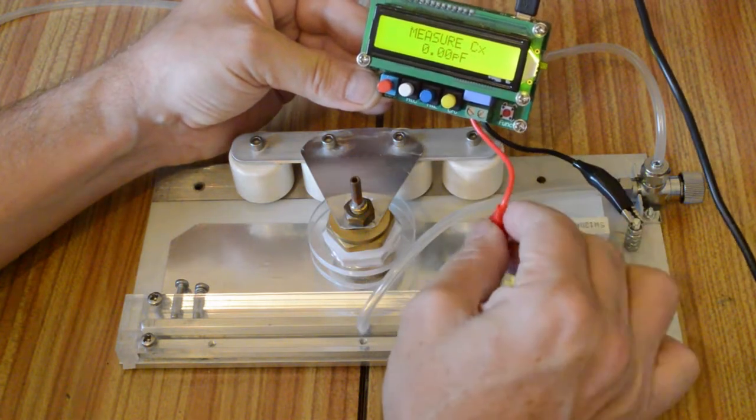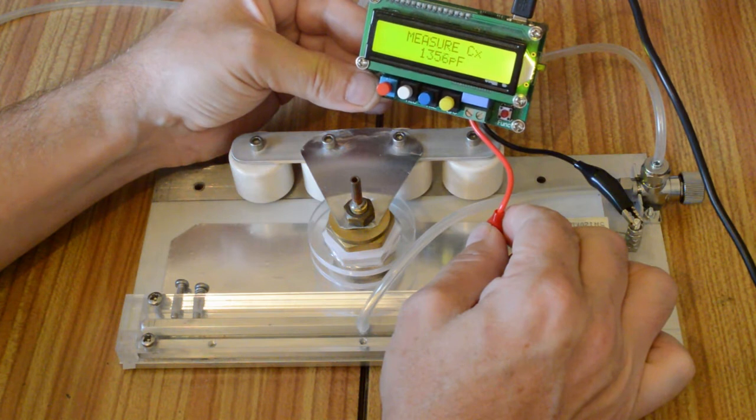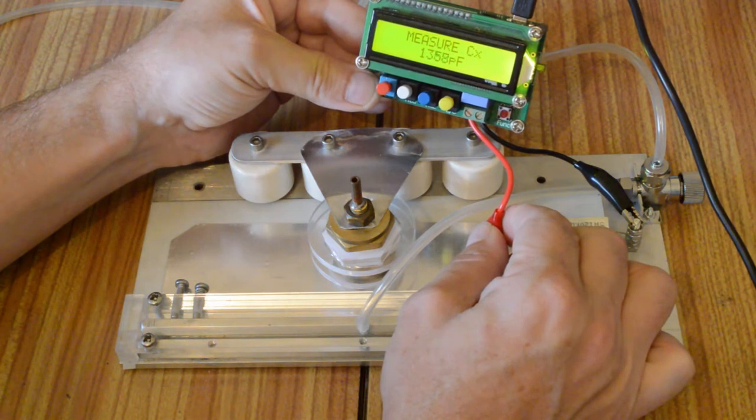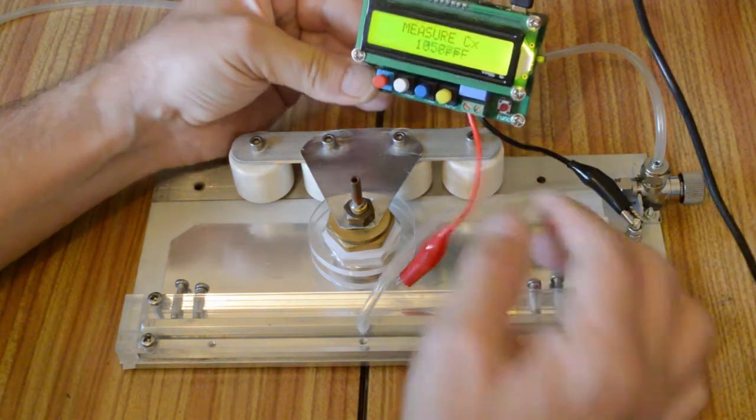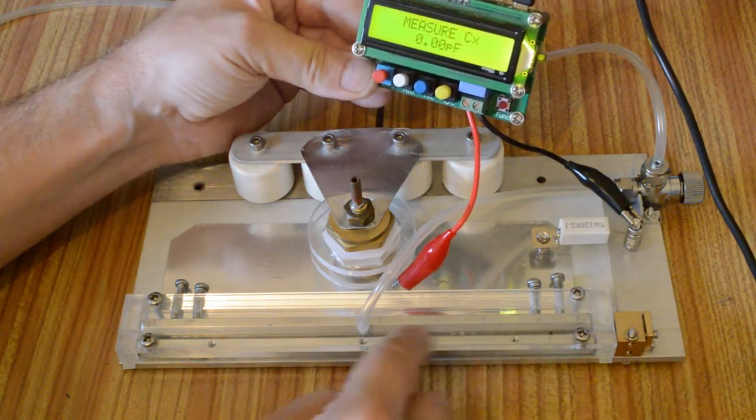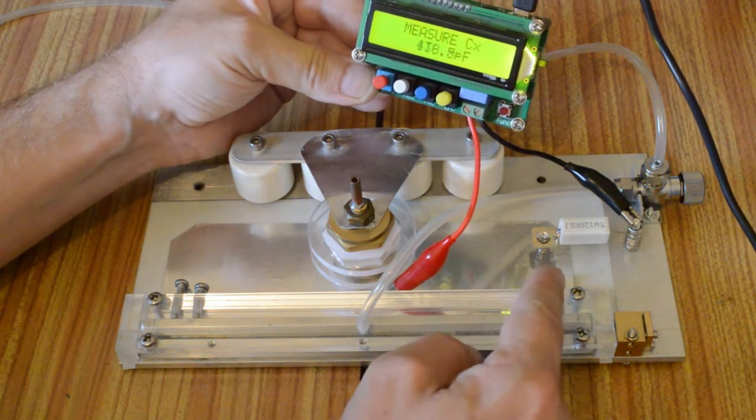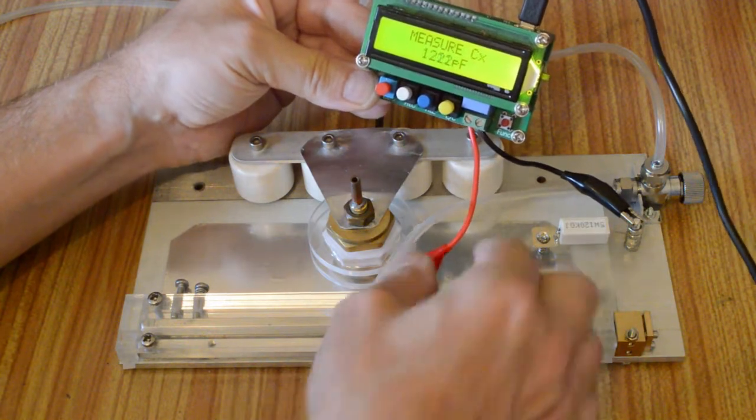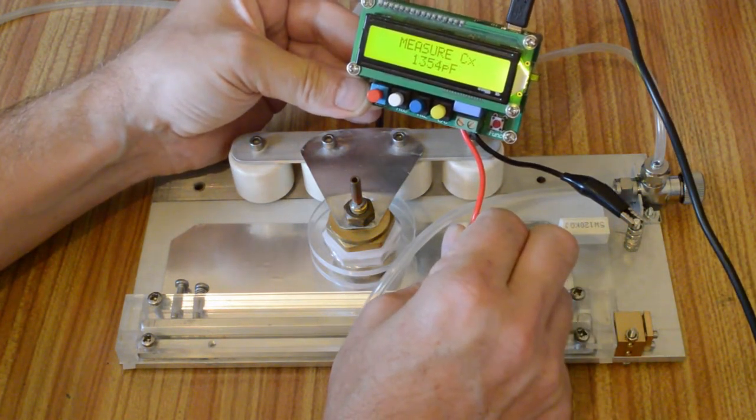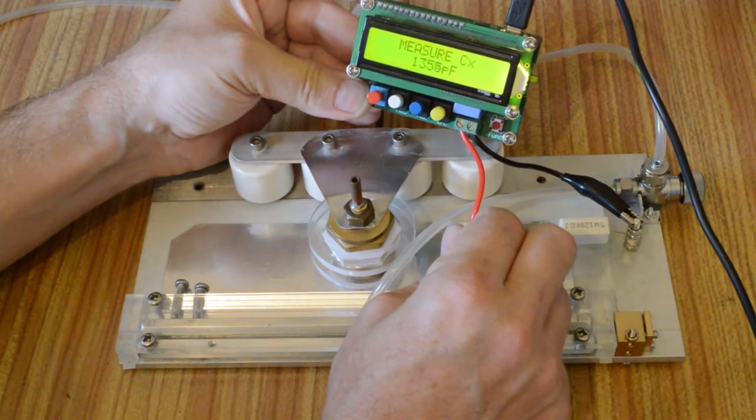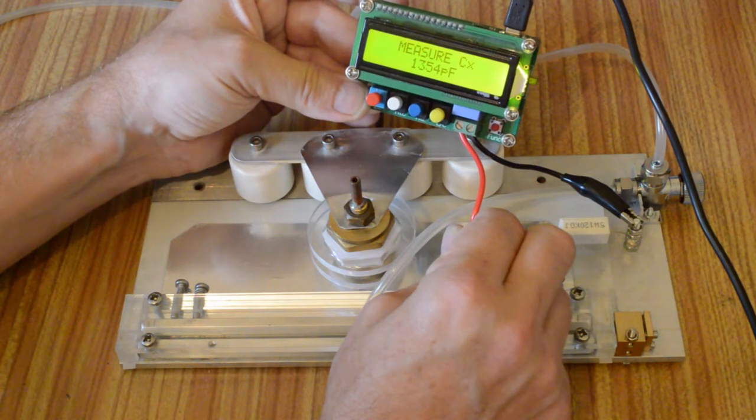If we measure the peaking capacitor, it measures 1350 odd picofarads. This actually works out, if you know the length of laser channel which is 21 centimeters, to 60 picofarads for every centimeter of the laser channel.